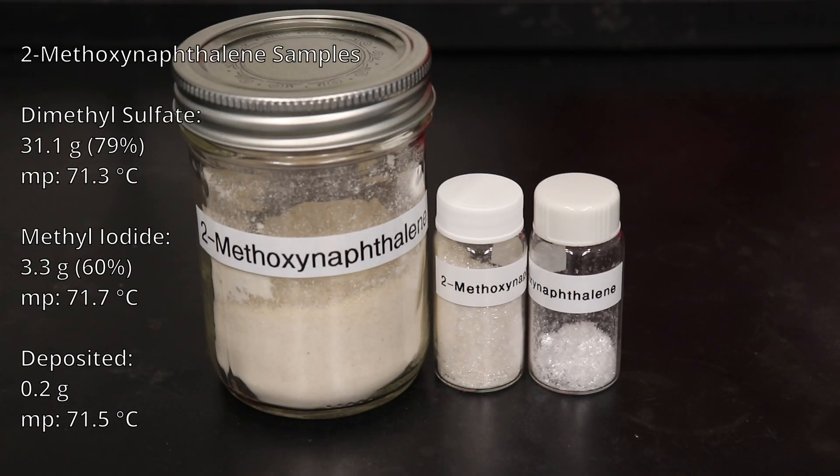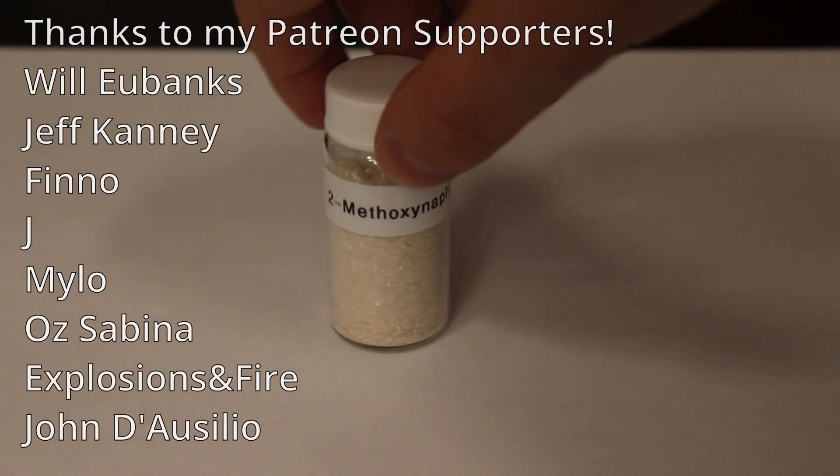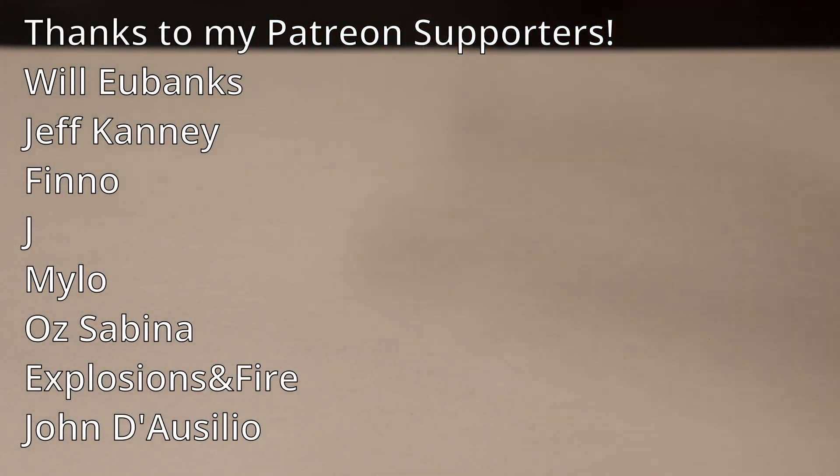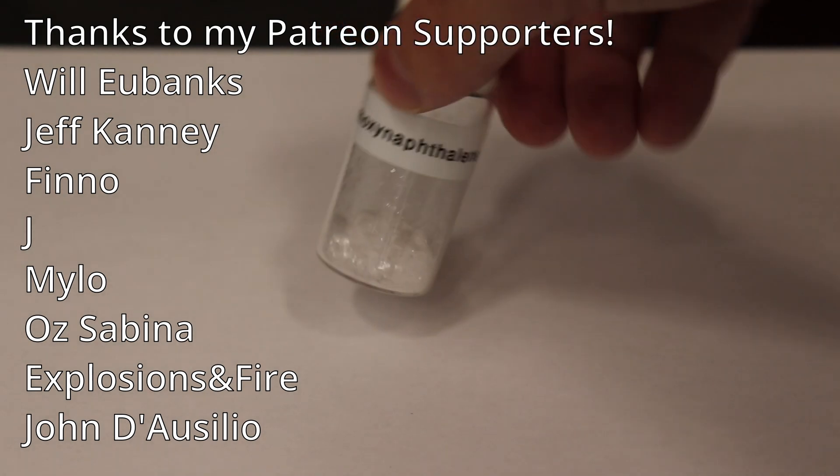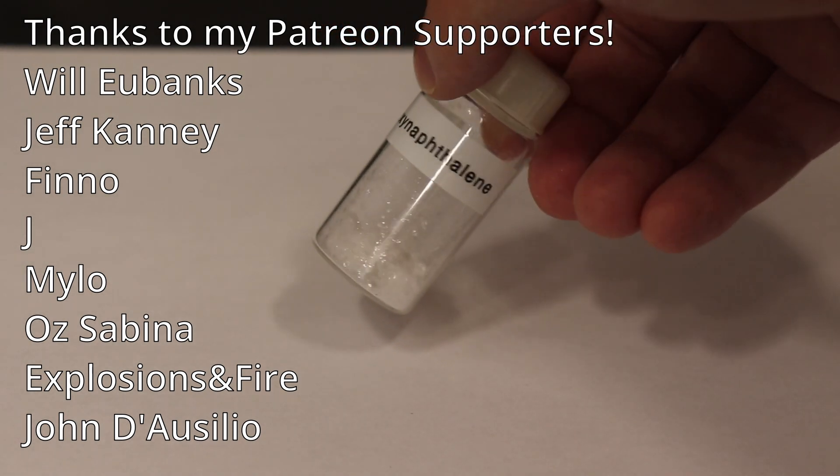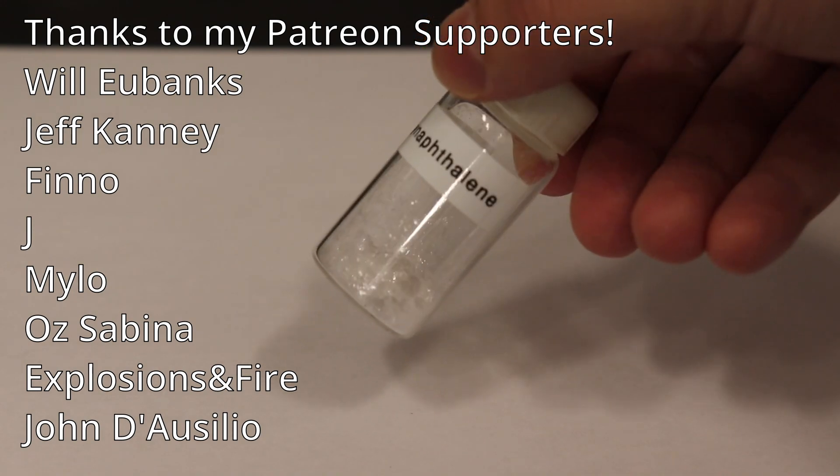Now we can recap our syntheses. The larger scale dimethyl sulfate preparation yielded 79% of 2-methoxynaphthalene, while the smaller scale methyl iodide methylation only yielded 60% of 2-methoxynaphthalene. We can see from the rightmost deposited 2-methoxynaphthalene that it is pure white, and comparing to the other two samples, which are slightly off-white, that might indicate the presence of a slight impurity in those samples. But since all the melting points are within 1 degree of each other and of the literature, we can be sure that our product is pure enough for moving forwards with future syntheses.